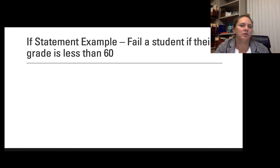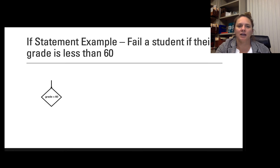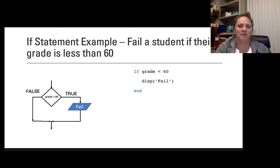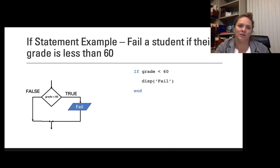As an example, I want a program or algorithm that just lets me know if a student has failed if their grade is less than 60. So I have a program where I've input the score, then I ask: is the grade less than 60? If that's true, I output fail. Otherwise, I do nothing — I'm only triggering on a fail. Translating this to a written algorithm or possibly MATLAB, it might look like this: if grade less than 60, display fail, end. Nothing happens if the grade is greater than or equal to 60 — it just completely skips everything within that if statement.